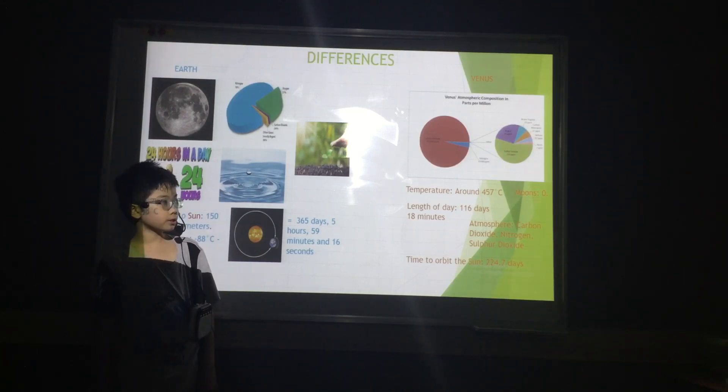Earth's distance to the sun is 100 million kilometers, but Venus's distance to the sun is 108 million kilometers.